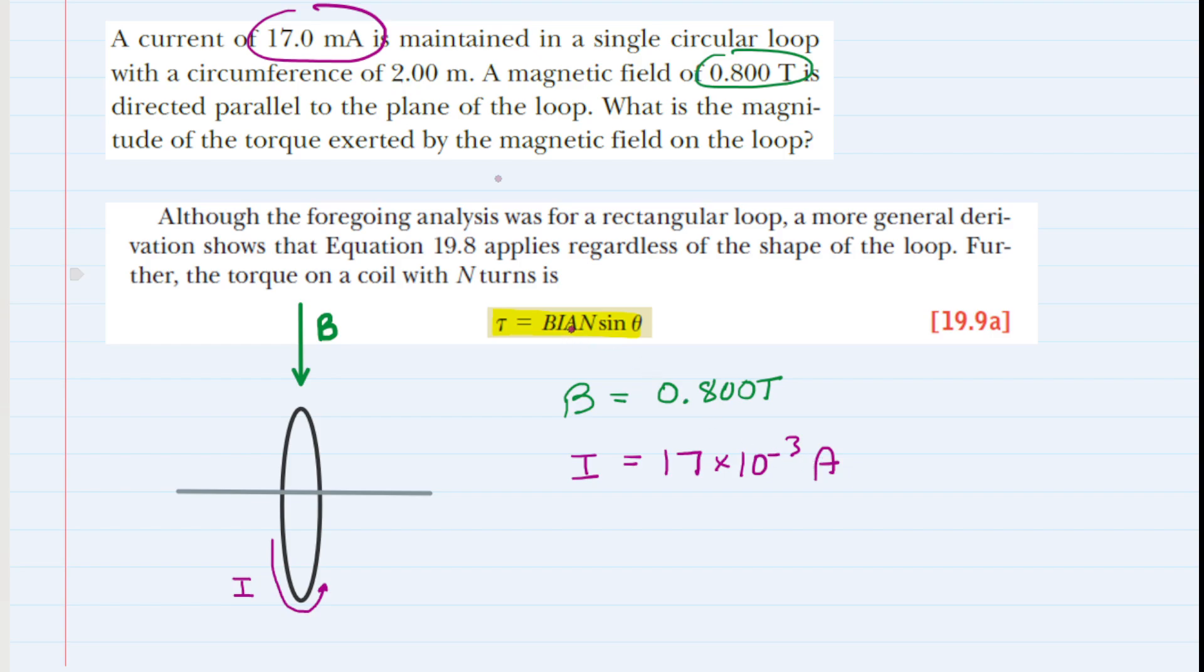Next, we have A, which represents the cross-sectional area of the loop. If you look at this picture, the area that we need would be the circular area right here. We know that to find the area of a circle, we employ the equation pi times the radius squared.